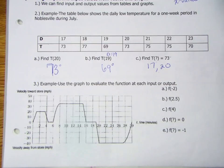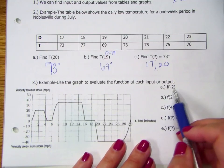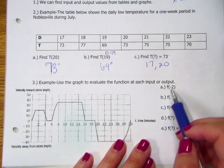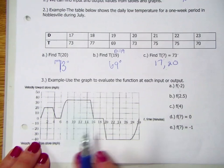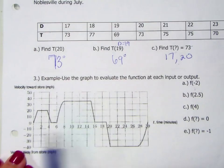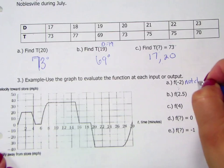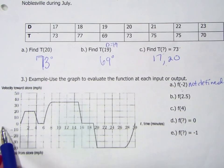Last example, use the graph to evaluate the function at each input or output again. We've done examples very similar to this before. So the first example is asking, what is the output when the input is negative 2? Well, if you look at this graph, what's the problem here? Look at your input. We don't have any negative values. So we would say that this is not defined. Okay? Can't plug in a negative 2. And if you actually read what this graph is talking about, it's talking about speed and traveling to and from a store. So we can't have a negative speed is what that comes down to.